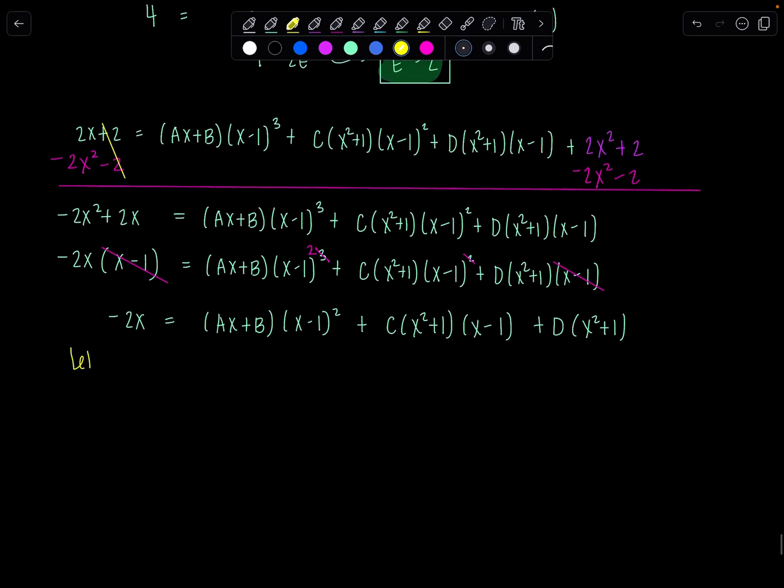So again, we'll repeat. We'll let x equal 1. And then now on the left-hand side, we have negative 2 equals... This will all be 0. This will all be 0. And then this is just going to be 1 plus 1 times d, so 2d. See how beautifully that worked out? Oh my goodness, I love it. So then now we know d is negative 1.